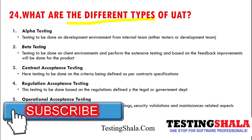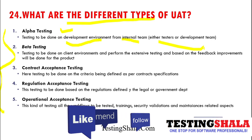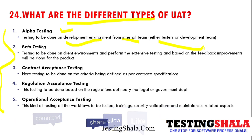There are five types of UAT. The first is alpha testing, which is done in the development environment by the internal team — either testers or the development team. The second is beta testing, where testing is done on the client environment, most probably by the client team or the end users.